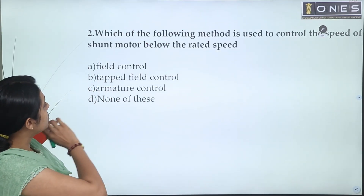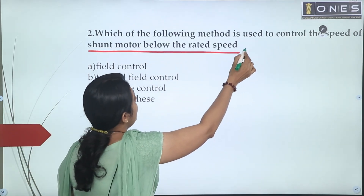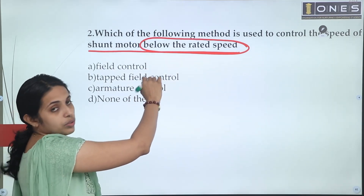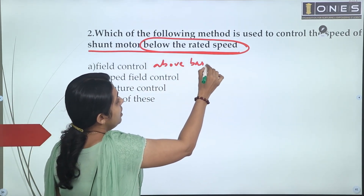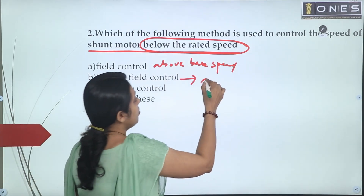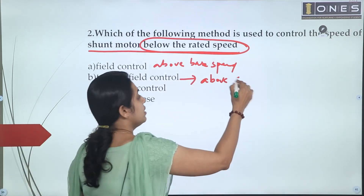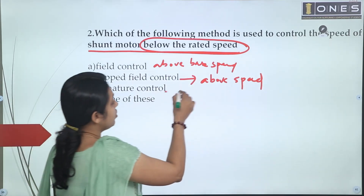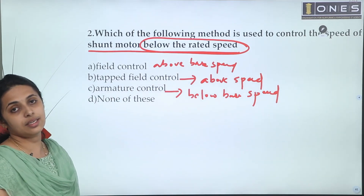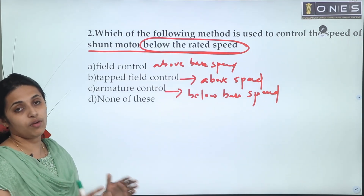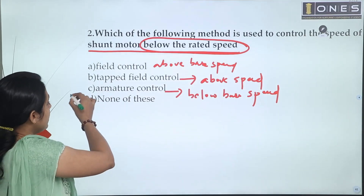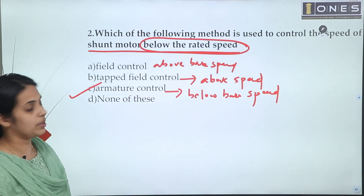To summarize: to control the speed of a shunt motor below base speed, we use the armature control method. Field control is used above base speed. The question asks for below base speed control, so the answer is Option C — armature control method.